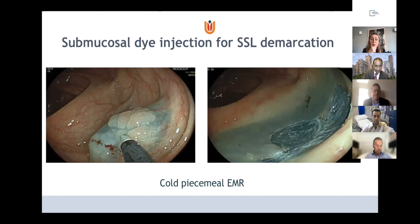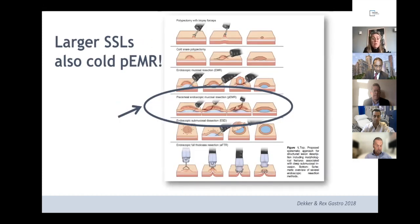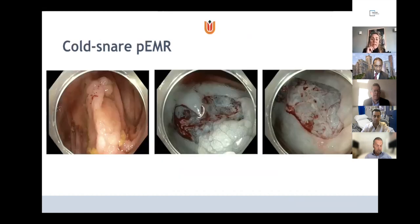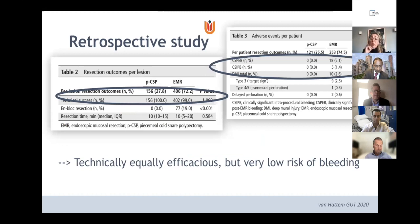This is submucosal dye injection with nice demarcation followed by cold piecemeal EMR. This can also now be done for larger lesions — larger SSLs. I would say this is becoming the gold standard resection technique for SSLs. After lifting, we take small pieces with crisp and sharp edges, exactly like hot snare piecemeal. A retrospective study from Michael Burke's group showed high technical success rates and low adverse events with cold snare piecemeal polypectomy. No prospective data yet, but already quite nice evidence.